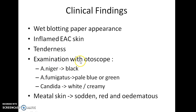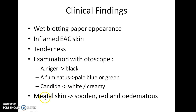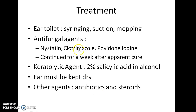On examination with an otoscope, in Aspergillus niger infection it will be black; in Aspergillus fumigatus it will be pale blue or green in color; and in Candida infection it will be white or creamy in appearance. The meatal skin will be sodden, red, and edematous.